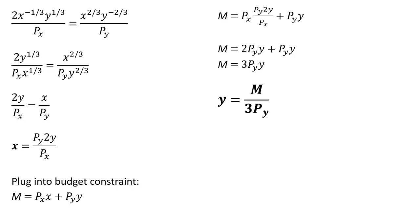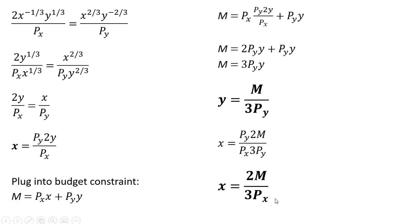To get the consumer's demand for good x, we take m divided by three times the price of good y — the demand for good y — and substitute it back into our expression for x. Where we have y, we plug in the consumer's demand for good y. The price of good y cancels, and we're left with the demand for good x.